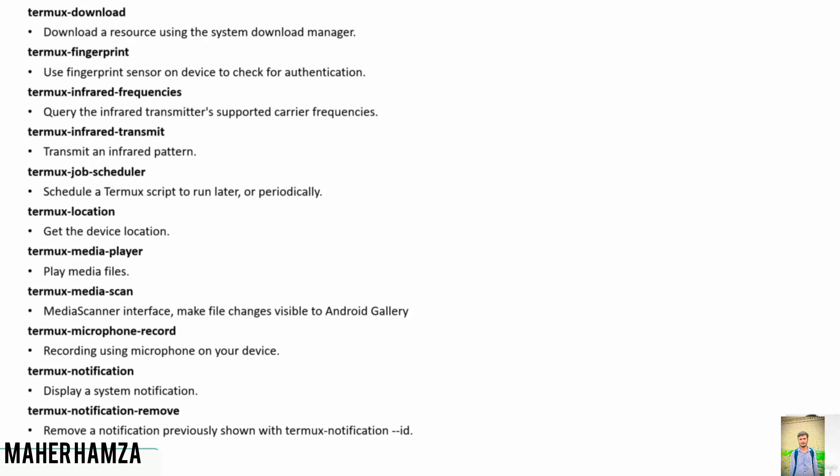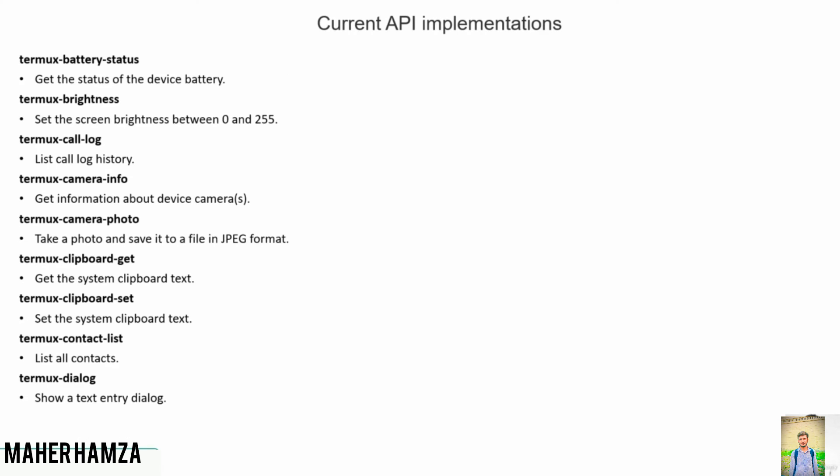Some commands also need arguments to run. For example, `termux-camera-photo` requires arguments. I won't be showing how to pass arguments in the video, because passing certain arguments to these commands could internally damage your mobile, which I don't want. If you're interested, you can search online — for example, search 'termux-camera-photo arguments' — and you'll find a list of usable arguments.